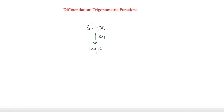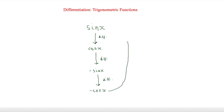Then cos x will differentiate to give minus sin x. Minus sin x will differentiate to give minus cos x. And finally, minus cos x will differentiate to go back to the start and give us sin x. Those are the relationships we have to learn when differentiating trigonometric functions, and now we'll put them into a couple of questions.